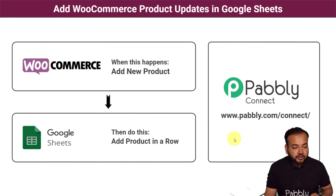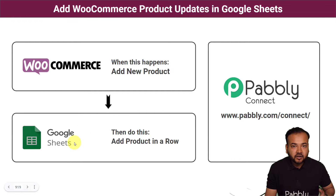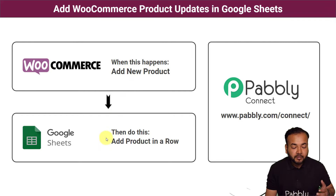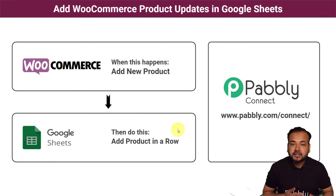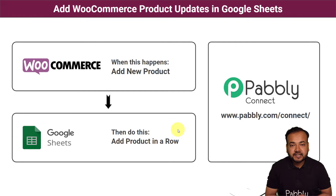The flow of this automation is going to look like this. Here we are using WooCommerce, which is an online store plugin of WordPress, and Google Sheets to save the data of the products. So as and when you add any new product in your store on WooCommerce, the data of that product will be delivered automatically into Google Sheets and the new product will be added in a new row automatically. And to make this happen we are using Pably Connect. This automation is going to save a lot of your time which you would have to spend on manually sorting out product details and adding them one by one in Google Sheets, so it will surely improve your efficiency and productivity.